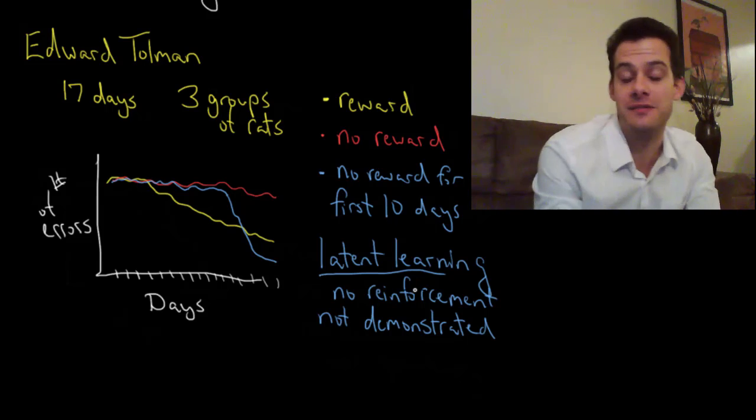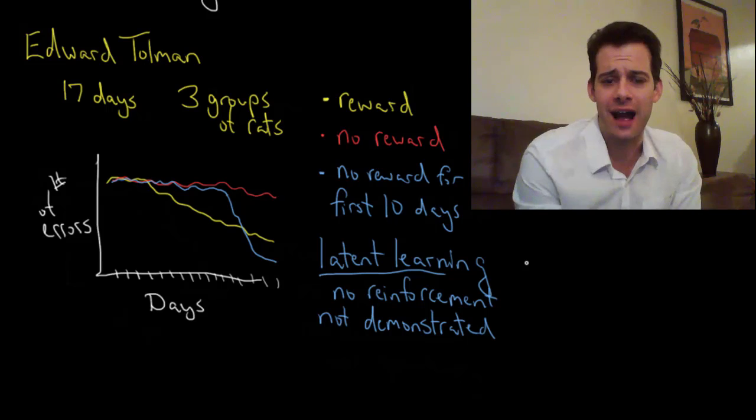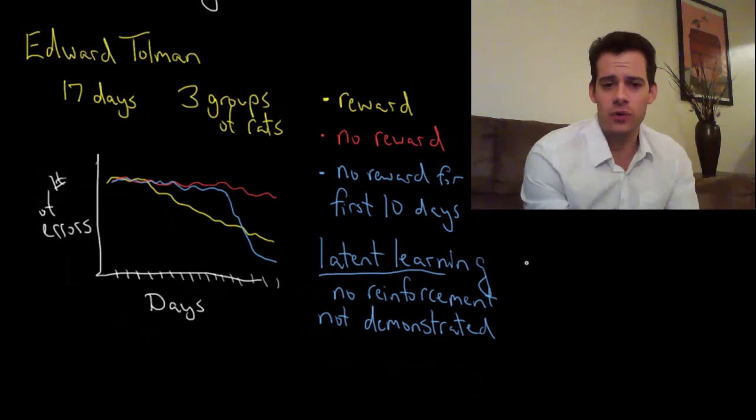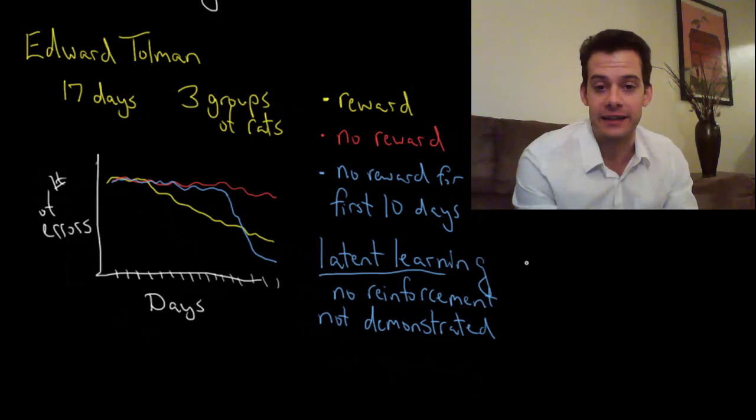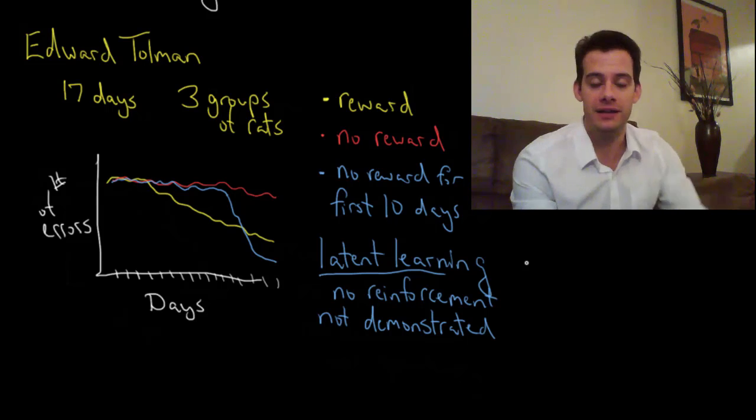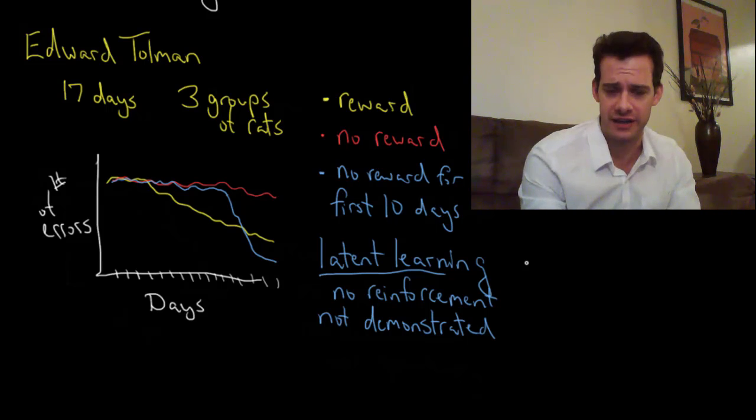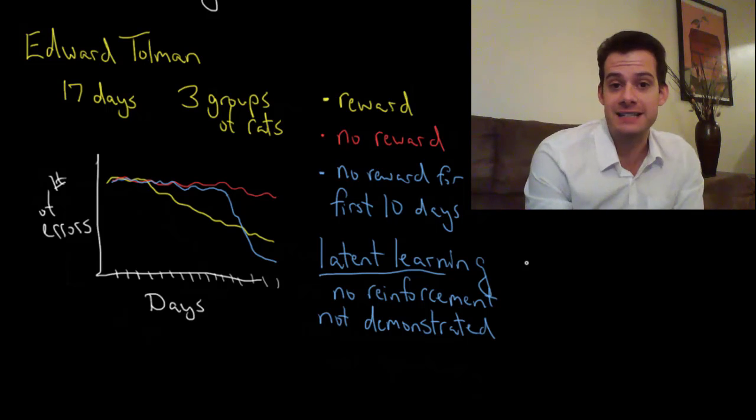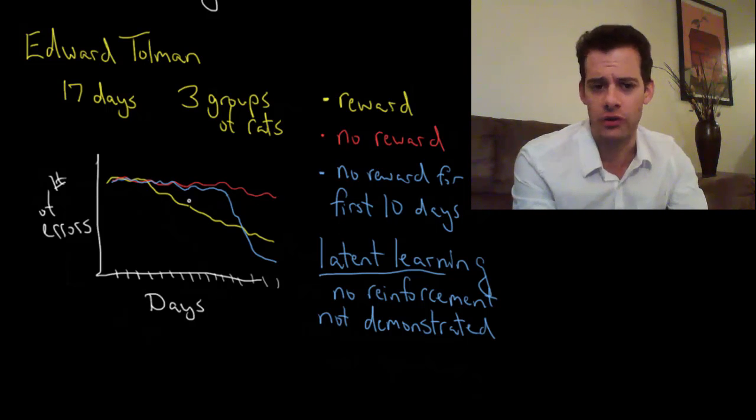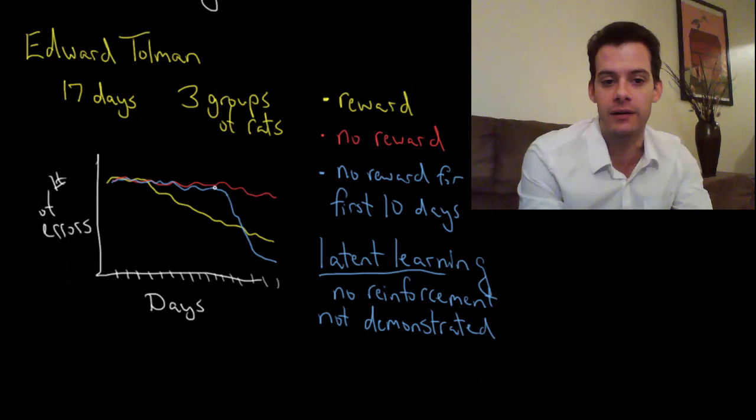Just because the learning hasn't been demonstrated doesn't mean that it hasn't occurred. We actually operate on this assumption all the time when you think about school. You sit in class for a lecture. We assume that you're learning something by sitting there but there's no observable change in your behavior. We hope that the learning is occurring latently. You're just not going to demonstrate that learning until the test day arrives. That's similar to the idea of these rats where they're learning about the maze but they have no reason to show you. Then you start putting a reward there and suddenly they demonstrate that they actually do know this maze pretty well.